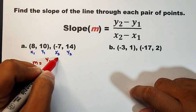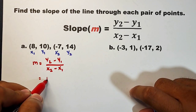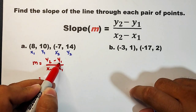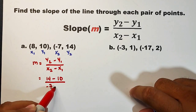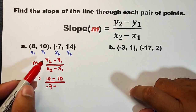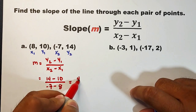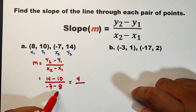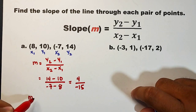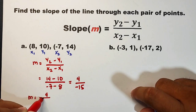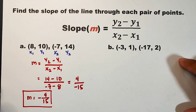Substituting: m equals y-sub-2 minus y-sub-1 over x-sub-2 minus x-sub-1, which is 14 minus 10 over negative 7 minus 8. Simplifying: 14 minus 10 equals 4, and negative 7 minus 8 equals negative 15. Therefore m equals negative 4 over 15. There is no further simplification, so this is the final answer.